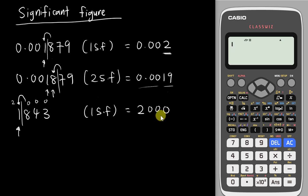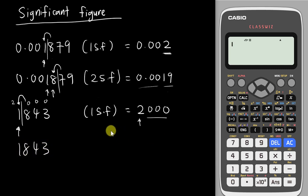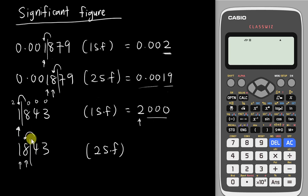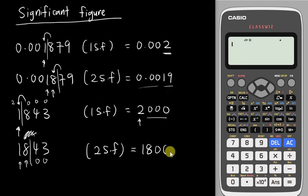Even though 2000 has four digits, we still call it 1 Significant Figure because you only see 1 digit followed by all zeros. For 1843 rounded to 2 Significant Figures: I count 1, 2, draw a line. The next digit is 4, which is less than 5, so I don't add one to the front. I keep 1, 8, then change the remaining digits to zeros, giving 1800. And 1800 is very close to 1843.